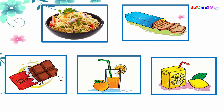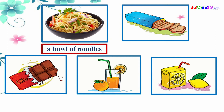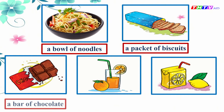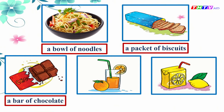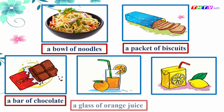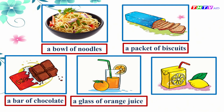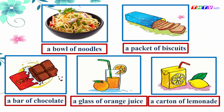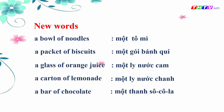Now, look at the picture and repeat. A bowl of noodles. A packet of biscuits. A bar of chocolate. A glass of orange juice. A carton of lemonade. You open your notebooks and copy down, please.